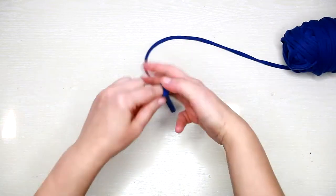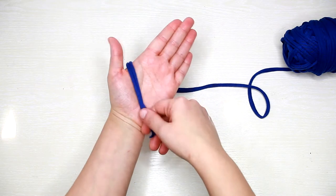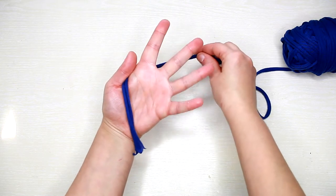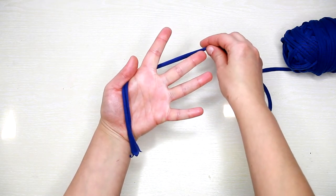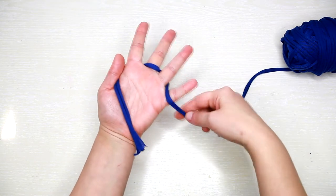Start by holding the end of the yarn with your thumb just like that. Then weave your yarn under the index finger, over the middle finger, under the ring finger, and over the pinky.